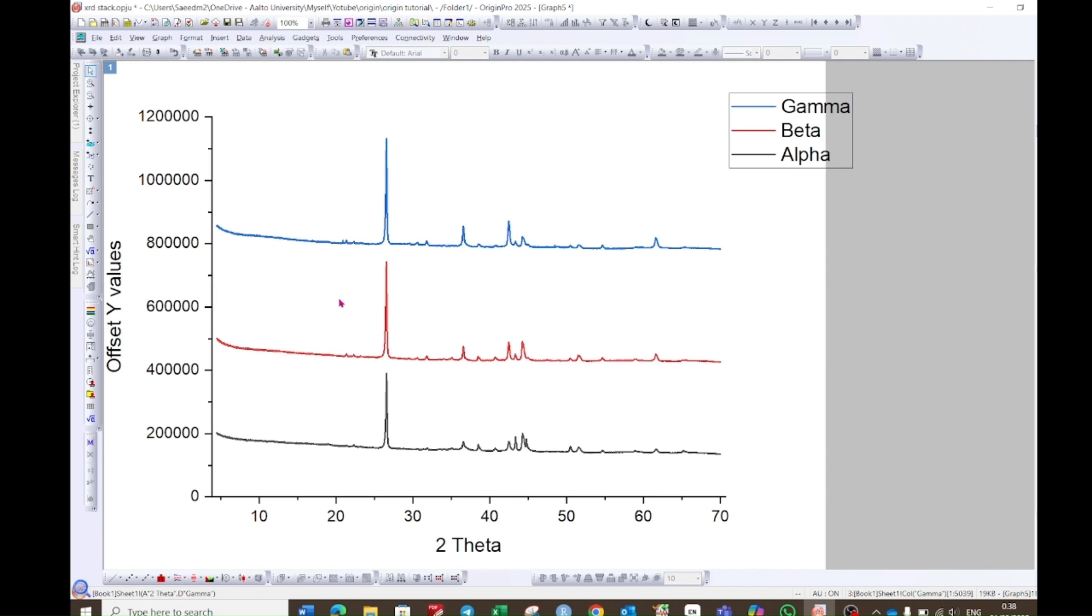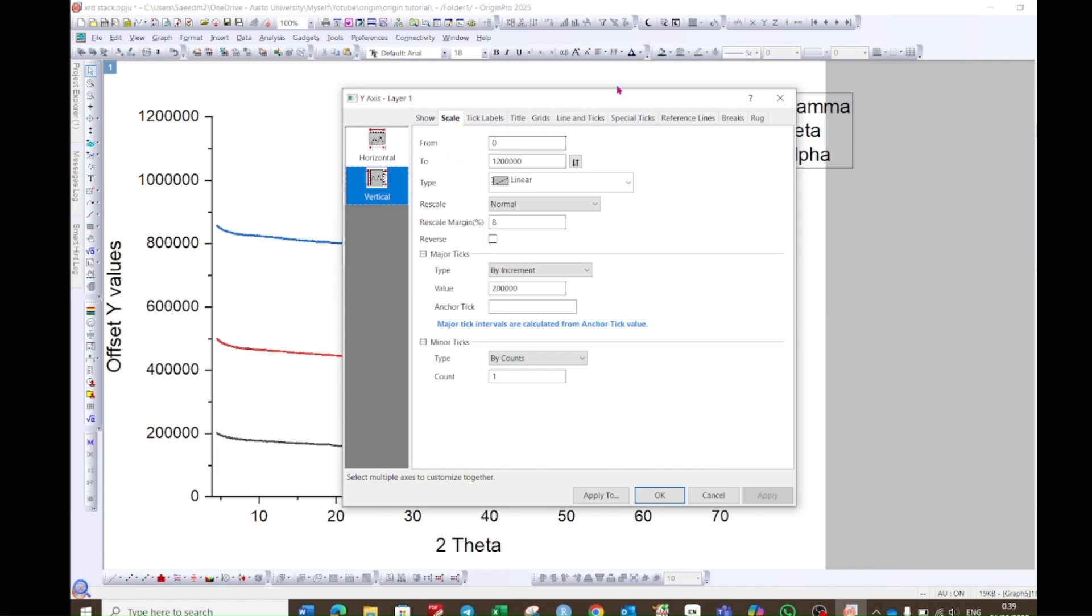For example, if you want to have more distance between these graphs, then you can double-click on this y-axis. It will pop up. Go to the scale option.